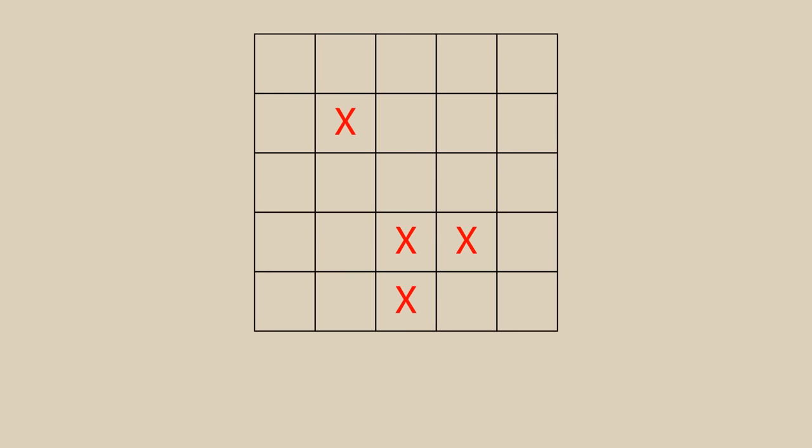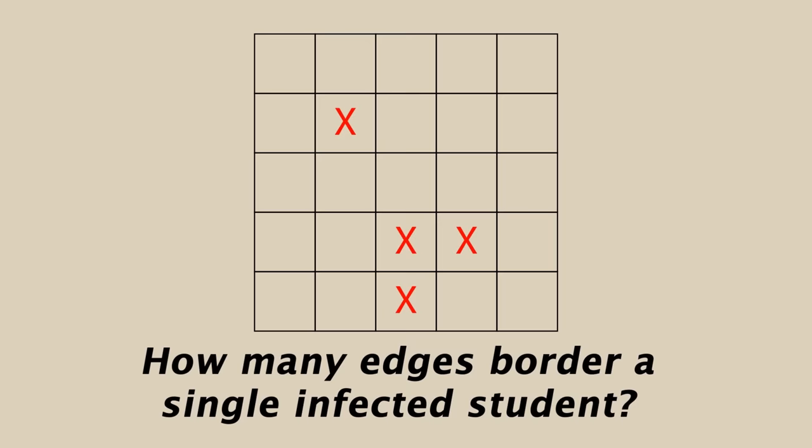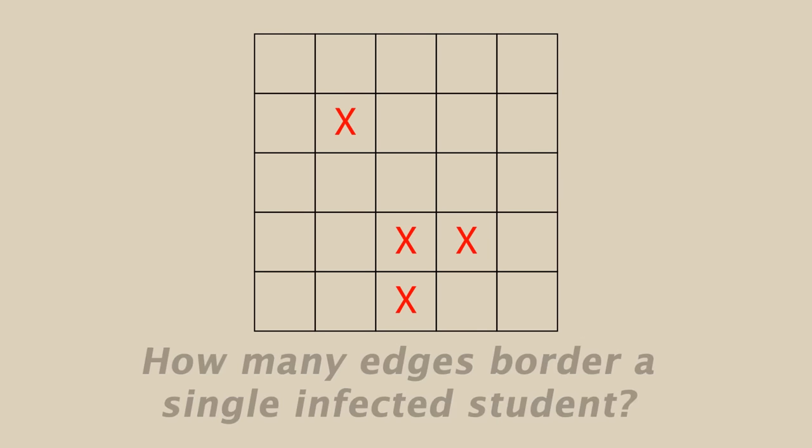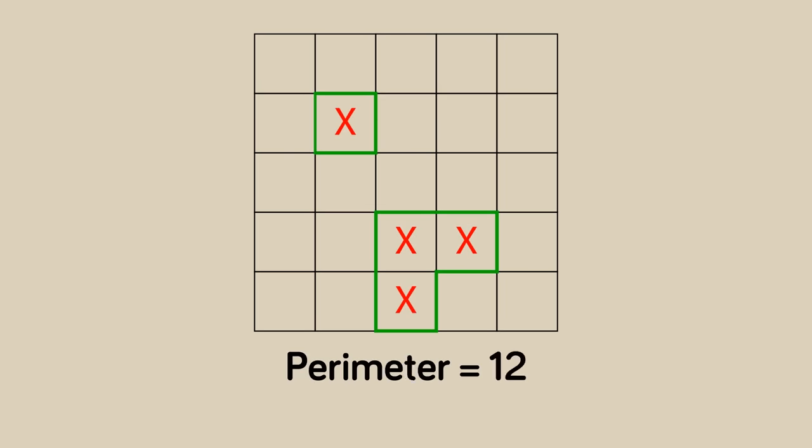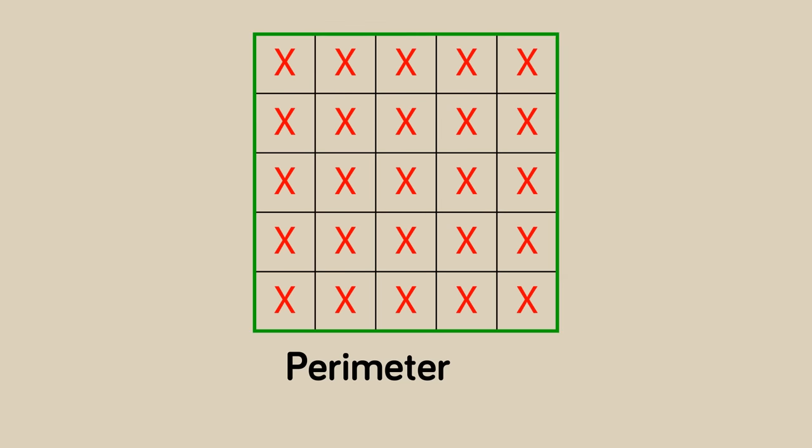The first thing we're going to do is count how many edges border a single infected student. Like this edge borders a single infected student, and same with all these four around them. And the same applies to this one here, and all these around the perimeter. We don't count this one, for example, because it borders two infected students. So right now we've highlighted 12 edges, and that will be considered the boundary or perimeter of the infected region.